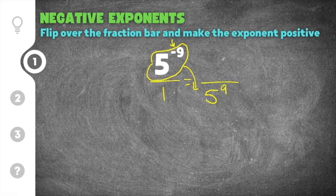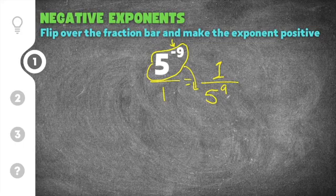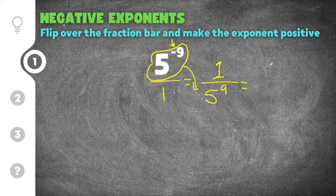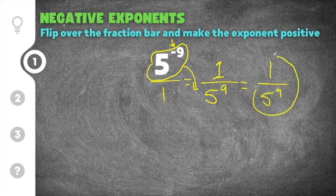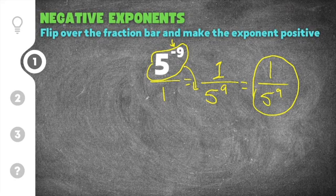Now there's nothing left in the numerator so we have to add a placeholder — the number one — because the number one doesn't change the value of this exponential term. Our solution is one over five to the positive ninth power, and that's the answer to this negative exponent term.